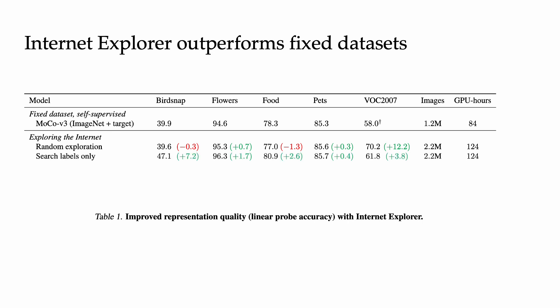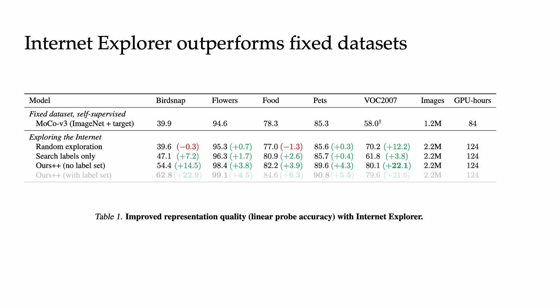Searching for just the class names slightly improves accuracy. But Internet Explorer, which is purely self-supervised, significantly improves performance on each dataset. And seeding Internet Explorer's initial queries with the class names further improves performance. Internet Explorer improves the linear probing accuracy by up to 23 percentage points, in just 40 hours of training and searching on one GPU.